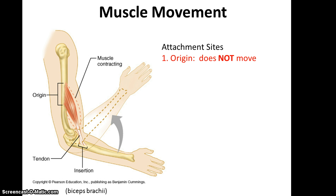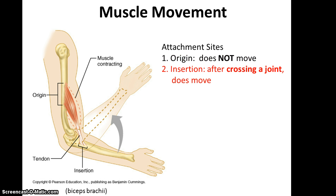When we think of a generic muscle, we think of it being attached in two places to two different bones. The first place of attachment is referred to as the origin, and the origin is located on the bone that does not move when the muscle contracts. The second side of attachment is called the insertion, and it is located usually on an adjacent bone, but it almost always has to cross over a joint, and it is the bone that will move when the muscle contracts.